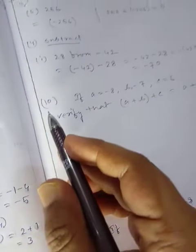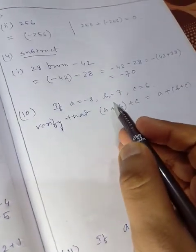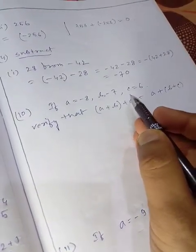Now the third question, question number 10. If a = -8, b = -7, c = 6.